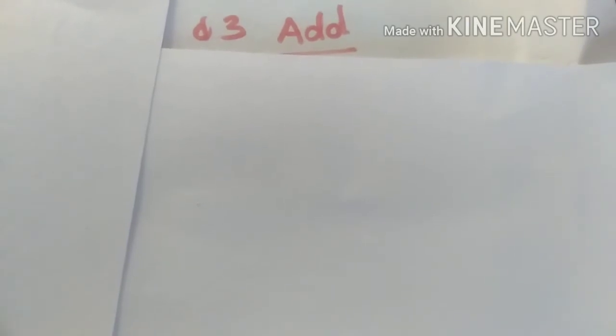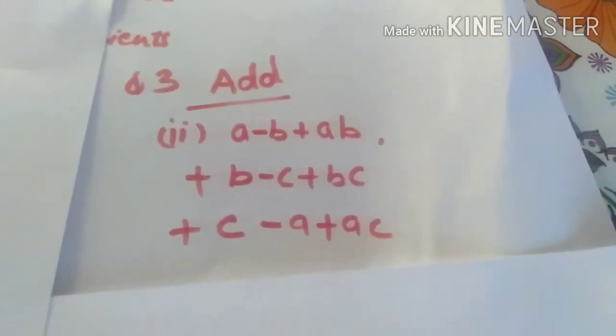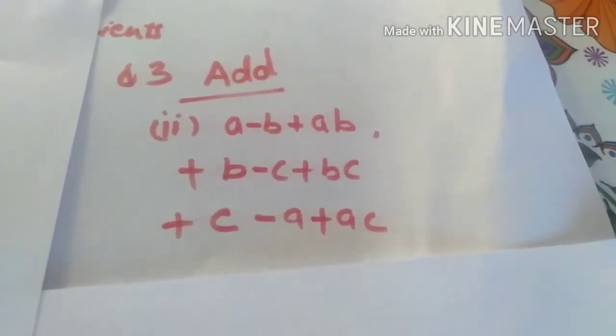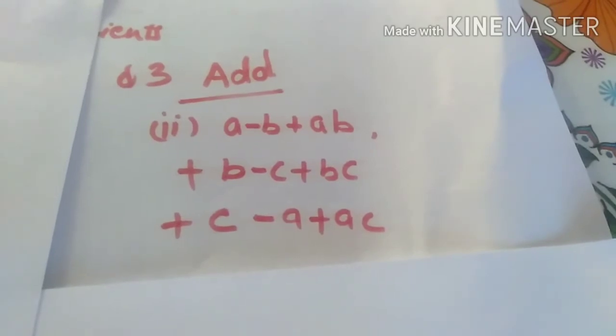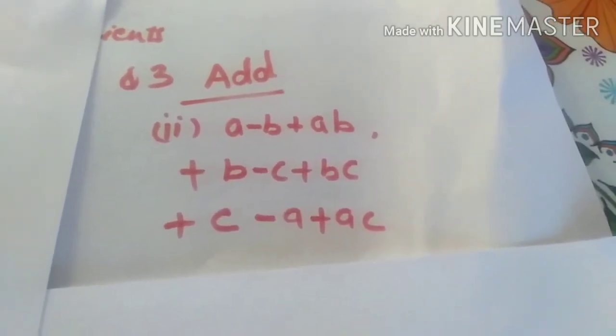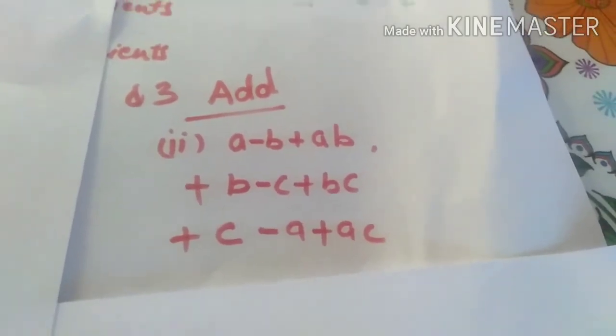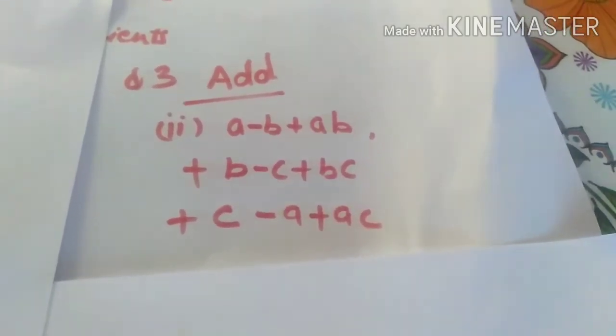Here the like terms, they are added together. These are the terms, expressions. A minus B plus AB plus B minus C plus BC plus C minus A plus AC. Now in these terms, you have to write in such a way that the like terms, they are tied together one over another.